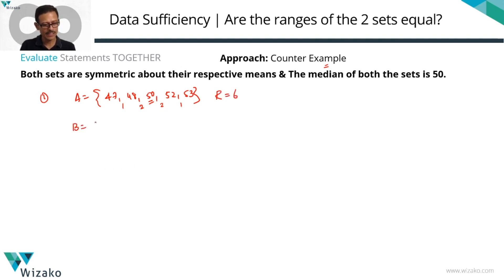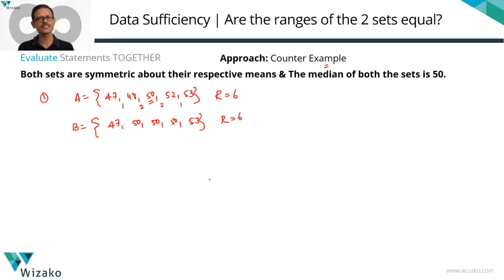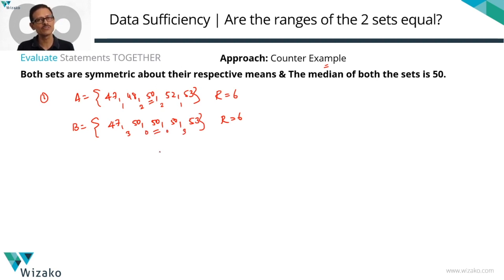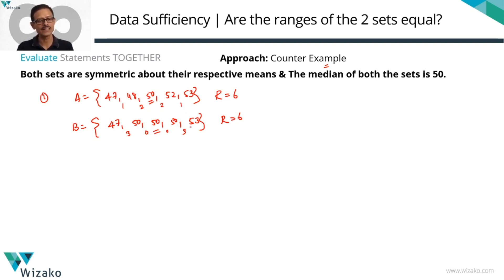For set B, going with 43, 47, 50, 53, 53 — a different set. Range is also 6. Is the median 50? Yes. Is the mean 50? Yes: 47+53=100, total 250 ÷ 5 = 50. So this is also symmetric about the mean, not necessarily an AP. In both cases the range is the same — answer is yes.